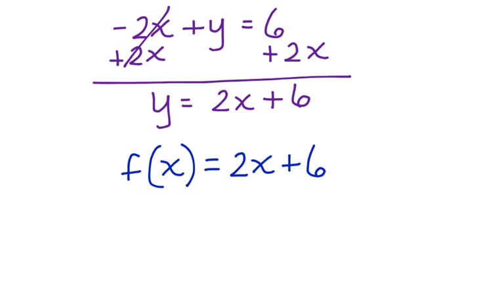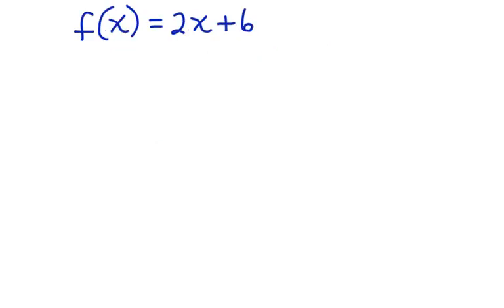f(x) equals 2x plus 6. Now we can figure out the slope and the y-intercept and then graph this equation. The slope is 2 and the y-intercept is positive 6.